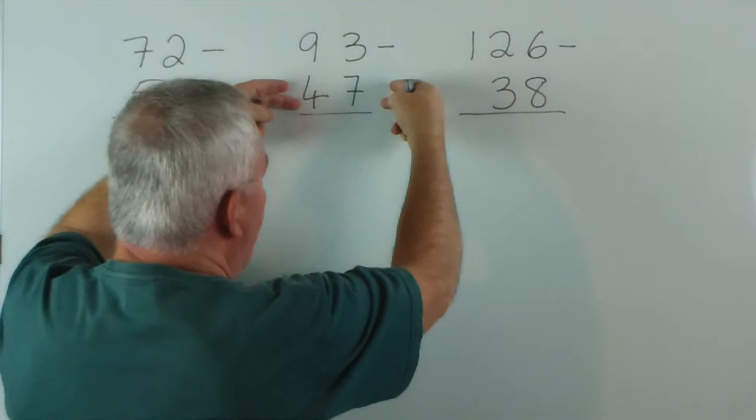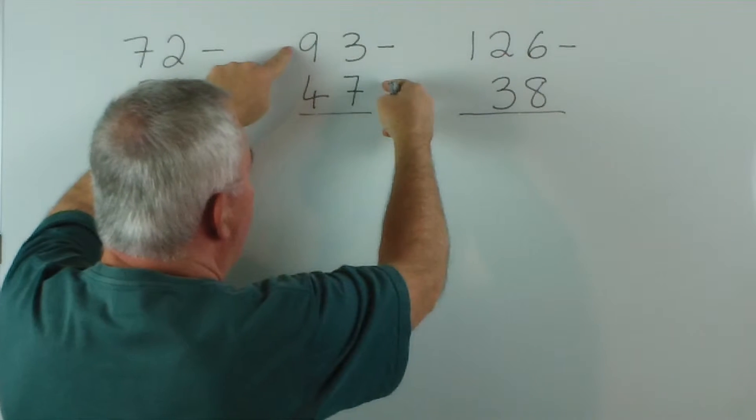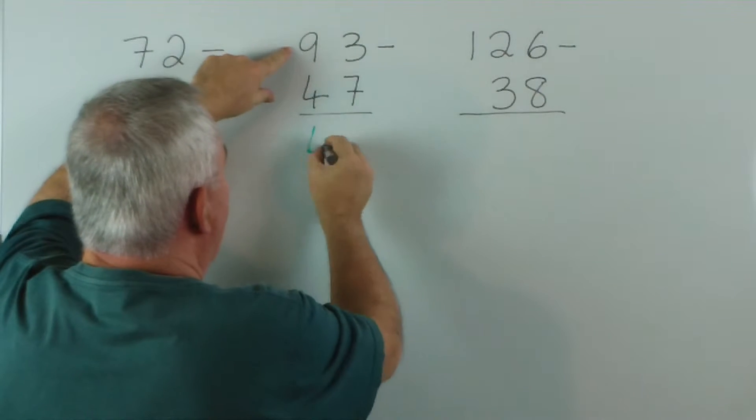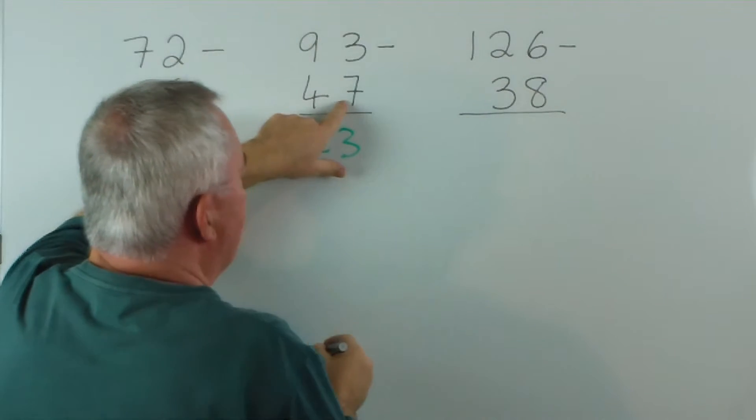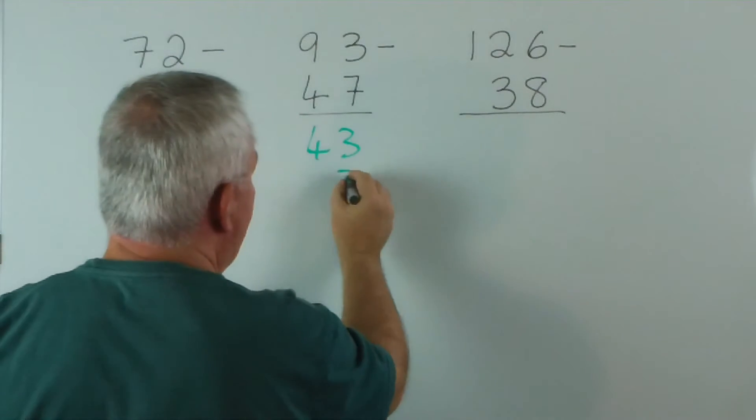This one we would round up to 50, and we would take 50 away from 93, which would be 43. And because that was 3 short of 50, we would add the 3 on afterwards.